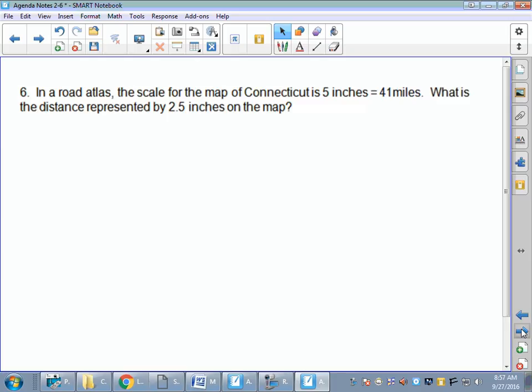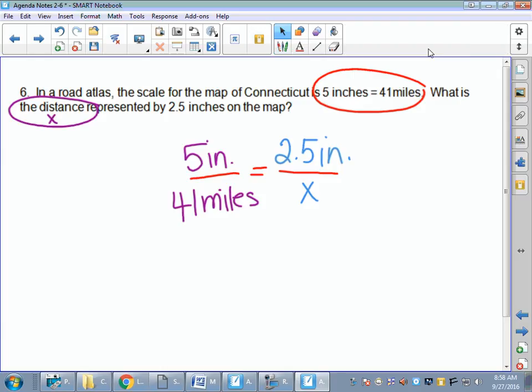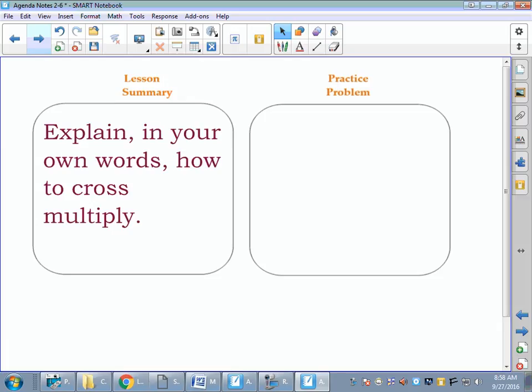Number six in a road atlas. The scale for the map of Connecticut is 5 inches equals 41 miles. What's the distance represented by 2.5 inches on the map? Now, you might be able to figure this out in your head. We could figure out a unit rate if we wanted. But I see right here where we could have half of a proportion. What is the distance? So that's going to be what my x is. So if I've got 5 inches for every 41 miles, please make sure that your inches are on the top for your second ratio. So 2.5 inches and x miles. Then we can cross multiply from there. Does everybody feel confident with cross multiplying? Hopefully you do, because I'm not going to finish this problem.